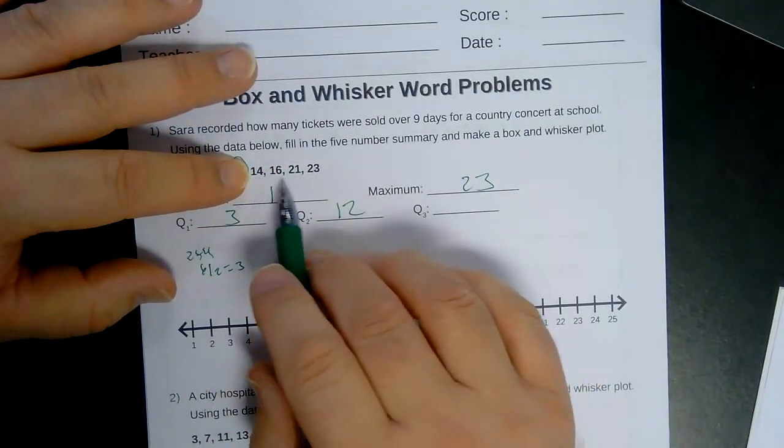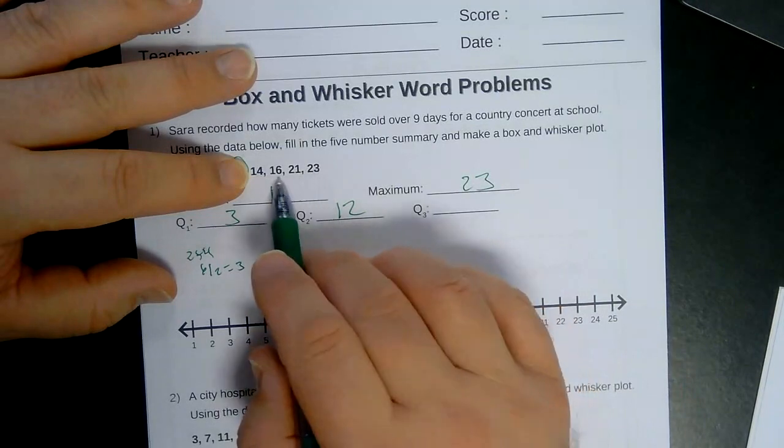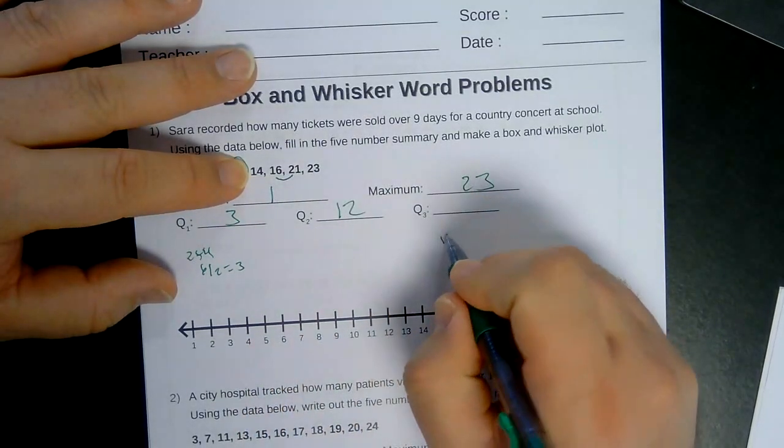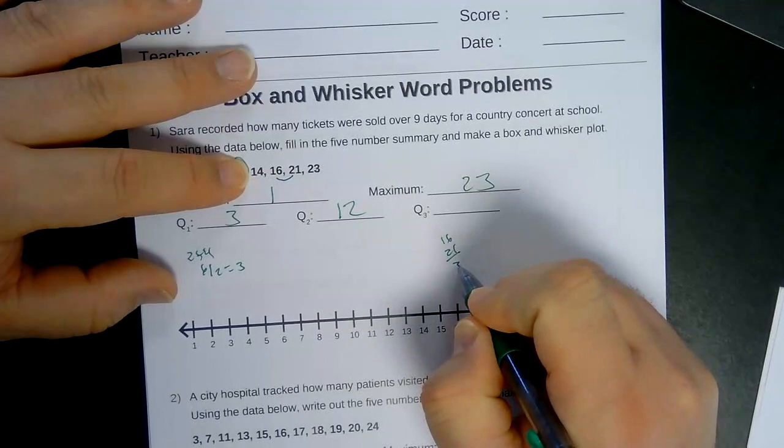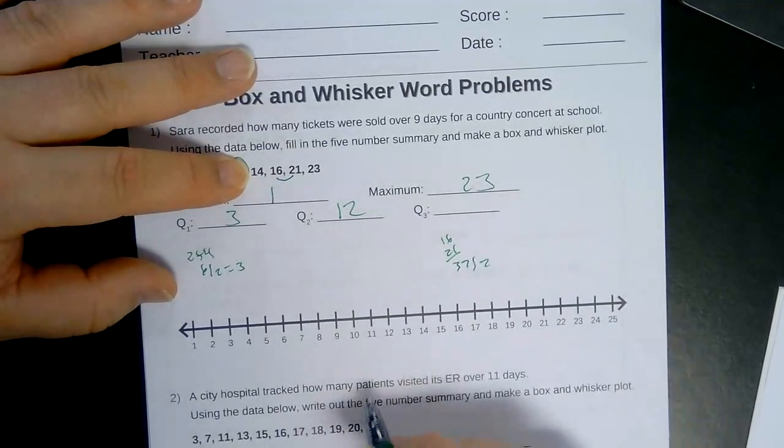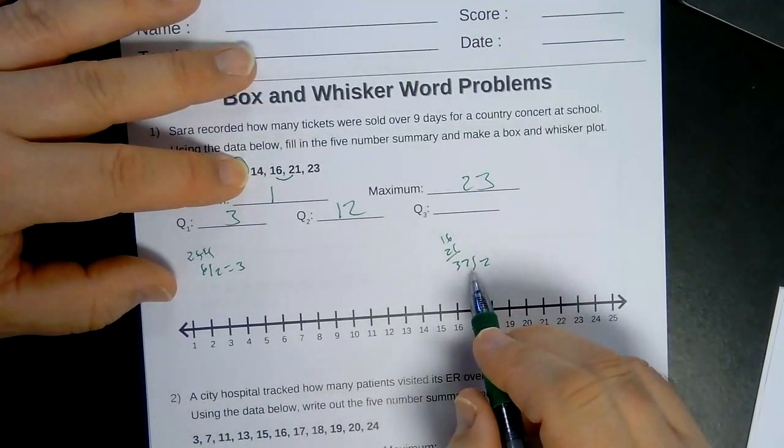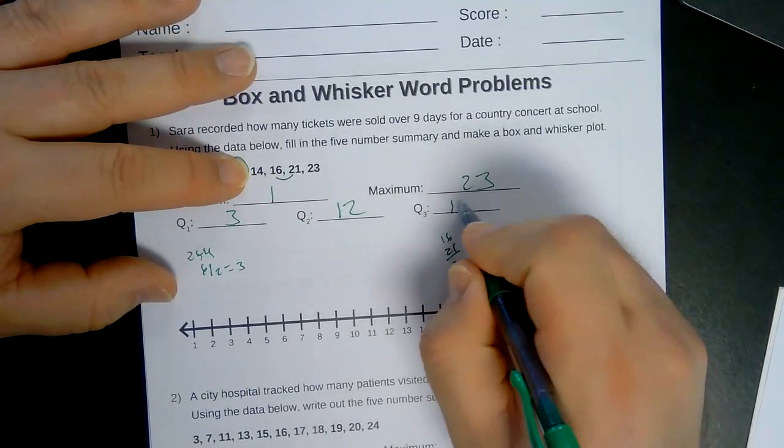And then we do the same thing on the upper half numbers. We have a tie between 16 and 21. So we add those up and get 37. Divide by 2. And that would be, let's see, 18.5.